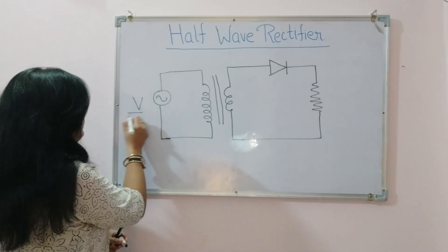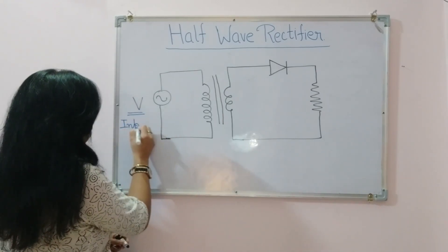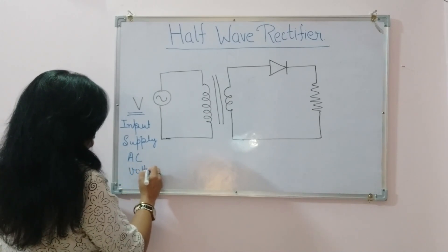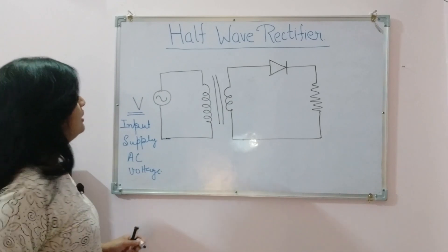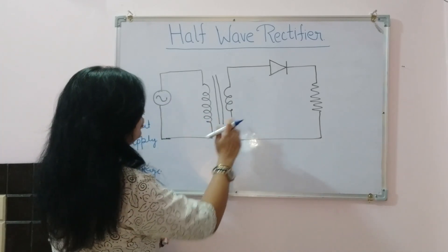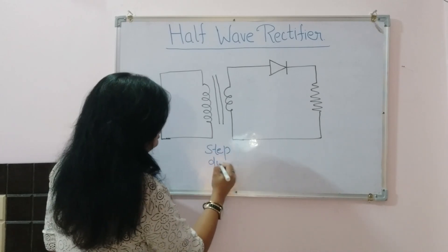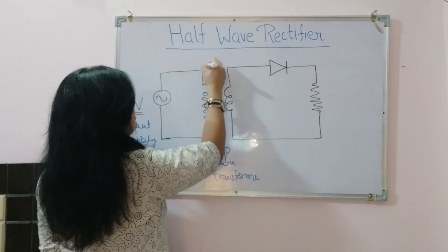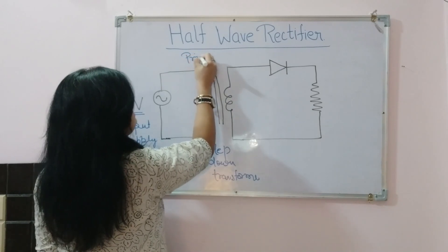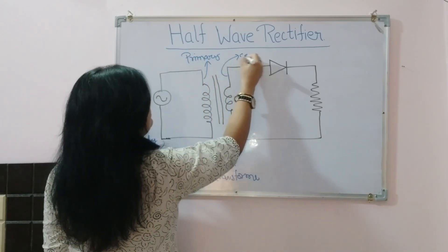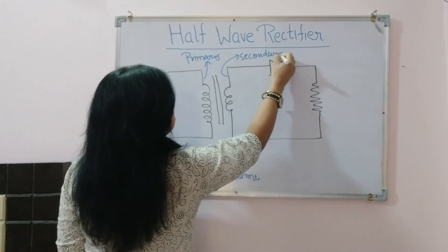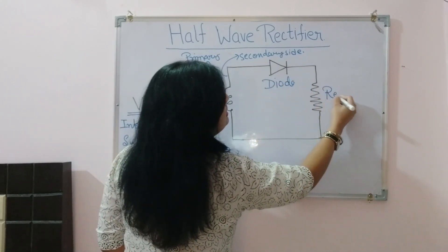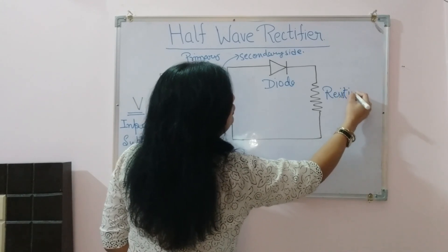First, here is V, which is the input supply — our input supply AC voltage. Then we have the step-down transformer with its primary side and secondary side. On the secondary side, we connect the diode and the resistive load.